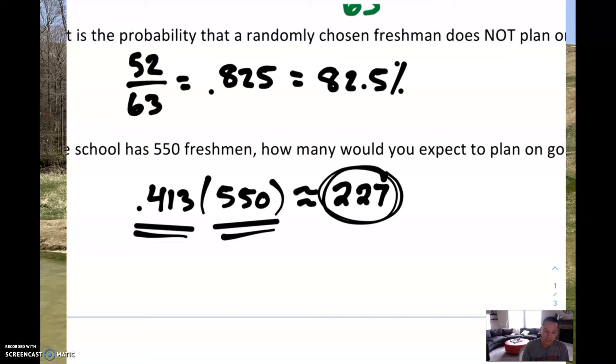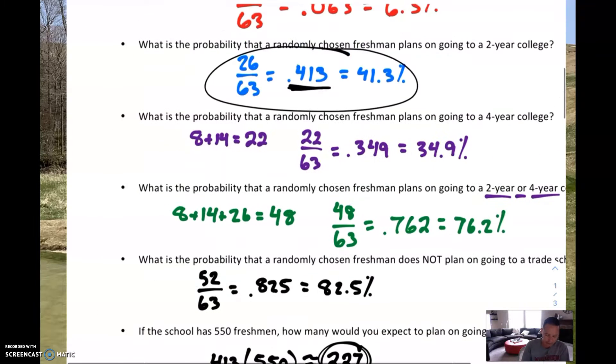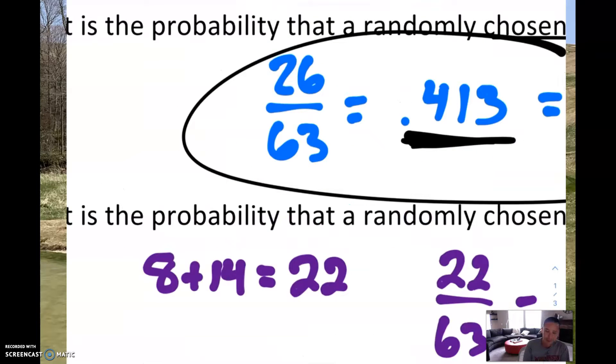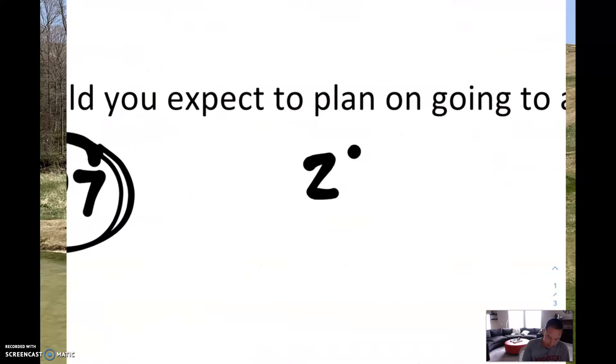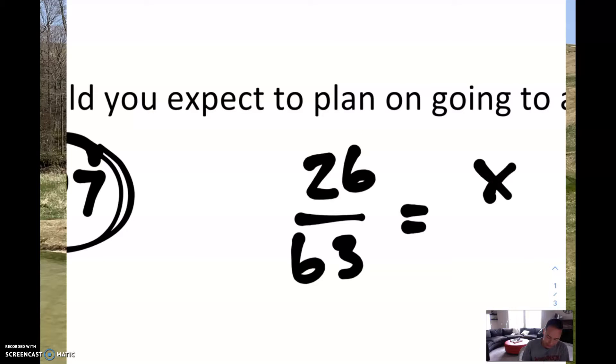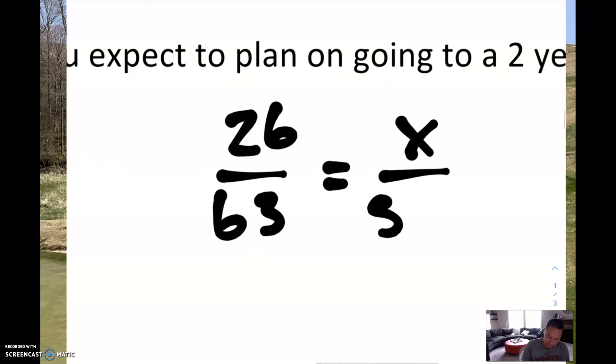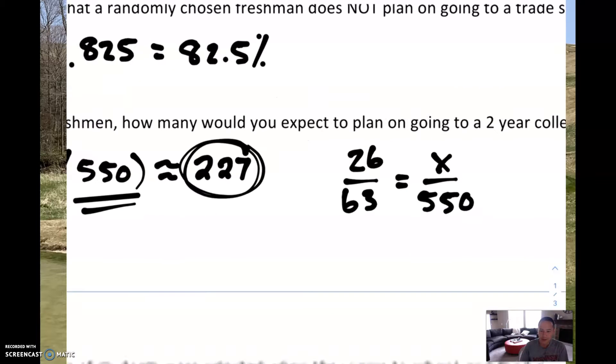Another way you could have done it is to set up a proportion. If we know that 26 out of 63 were going to a two-year college, you could have also set up 26 out of 63 equals how many out of the total class, which was 550, cross-multiply, and you're good to go. That's another way you could have solved it. You'd get basically the exact same answer, maybe a decimal off because we rounded.